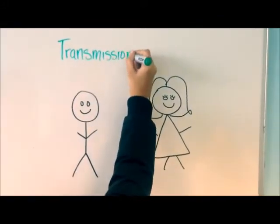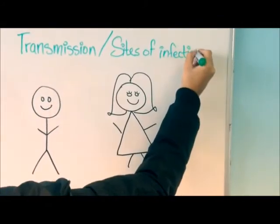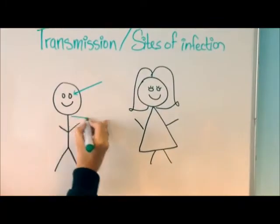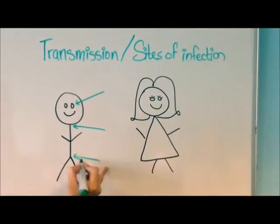So the transmission sites associated with this bacterium. In males it can be transmitted through the rectum, throat or the urethra.